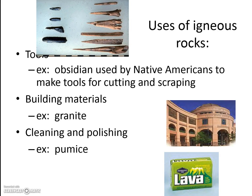Some igneous rocks: obsidian was used by Native Americans to make tools for cutting and scraping. Granite is used for building materials and tombs. Pumice is used for cleaning and polishing, which is kind of cool.